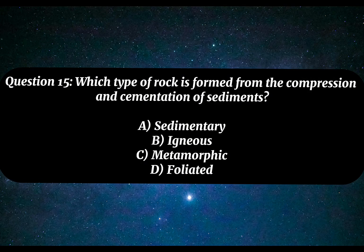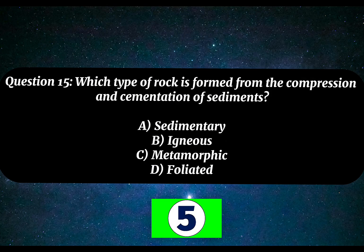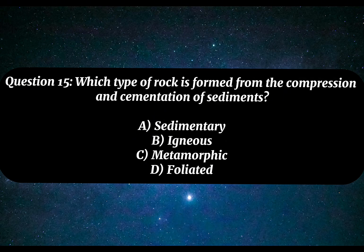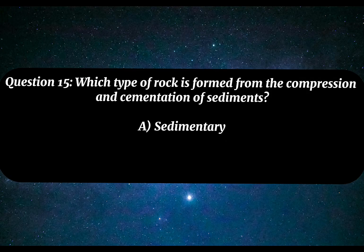Question 15. Which type of rock is formed from the compression and cementation of sediments? A. Sedimentary. B. Igneous. C. Metamorphic. D. Foliated. Correct answer: A. Sedimentary.